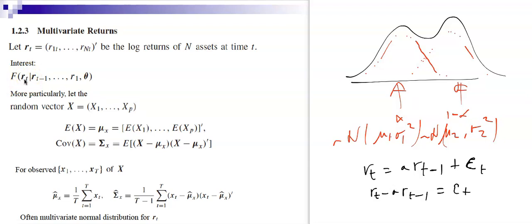Specifically, we want to know the conditional distribution of the return vector R_t given R_{t−1}, R_{t−2}, ..., R_1, parameterized by θ. In a multivariate normal distribution, θ includes the means, variances, and covariances. The goal is to predict tomorrow's returns given what happened today and in previous days.